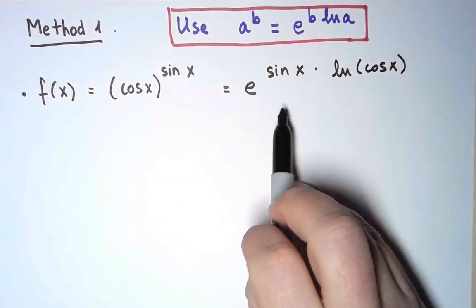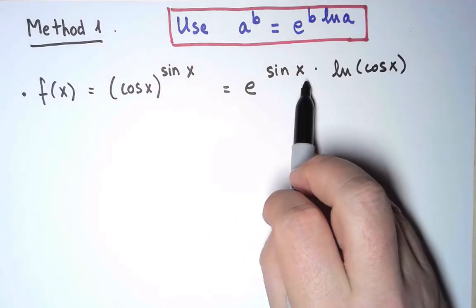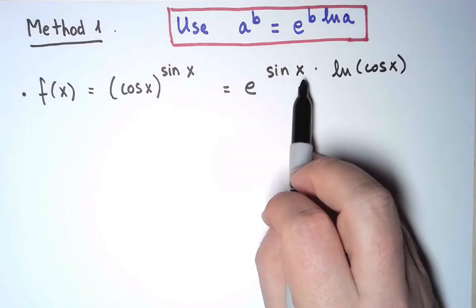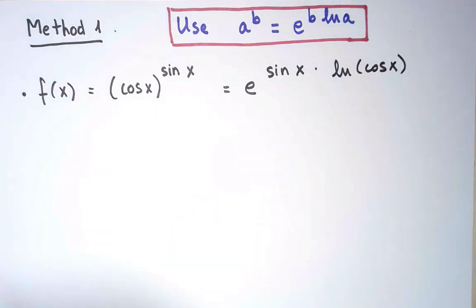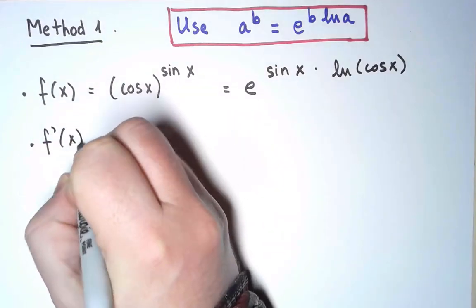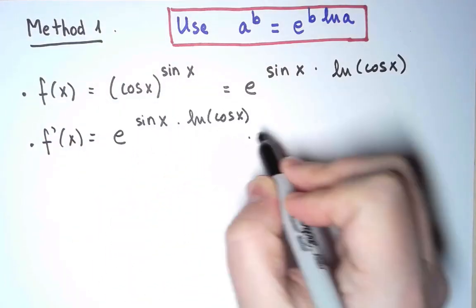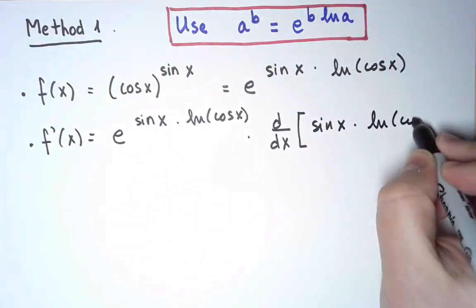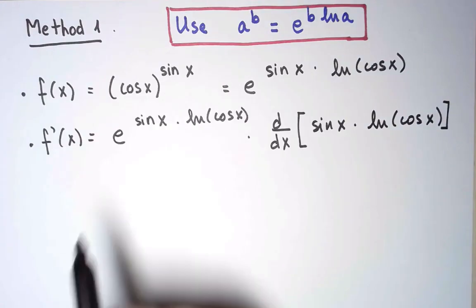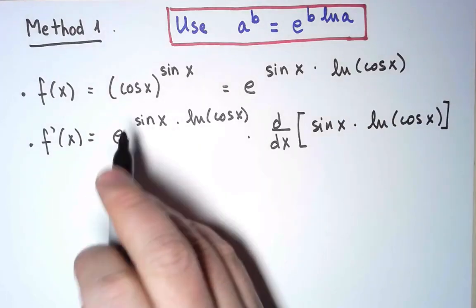And once I have it this way, yes, I know how to take the derivative. This is an exponential of a function. So the derivative will be itself times the derivative of the exponent.